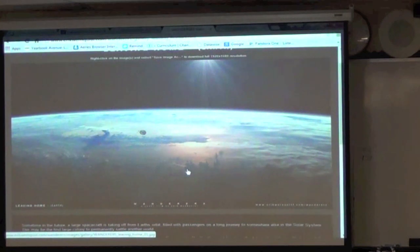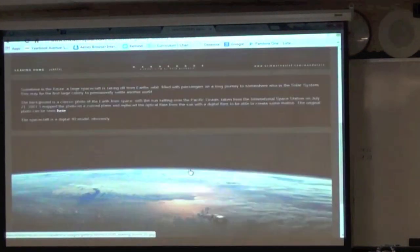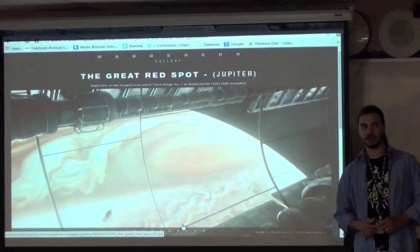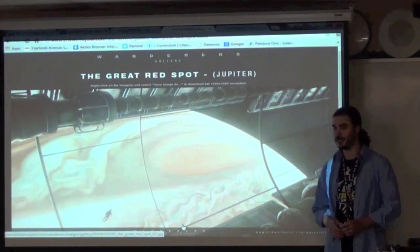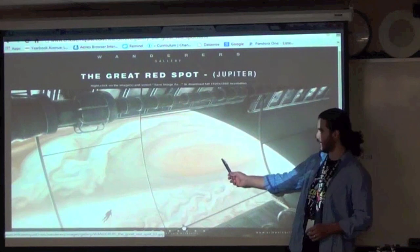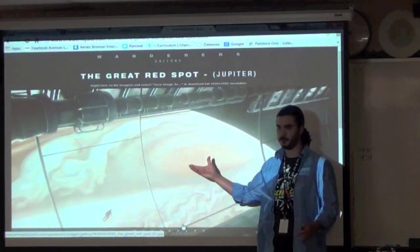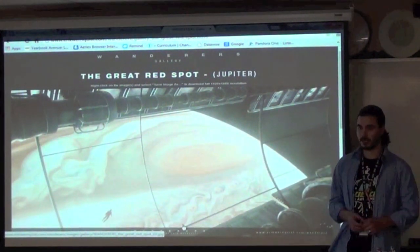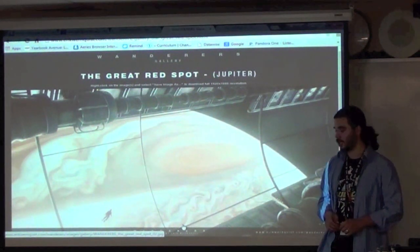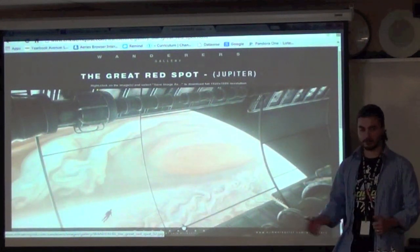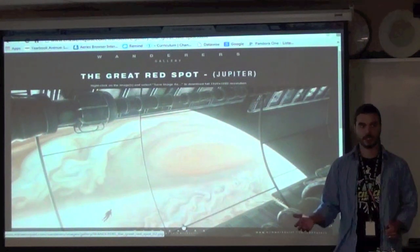We talked about the spaceship design with its components that rotate and how that creates artificial gravity. This is the Great Red Spot on Jupiter. A couple of interesting things: it's at least 300 years old — that was the first time anyone spotted it. It's actually been shrinking. Since about 1970 it's been getting much, much smaller. When it was the size depicted here, you could fit two Earths in there with room to spare — this thing is huge. But it's been shrinking drastically and it's possible that within a few decades it's going to be gone.